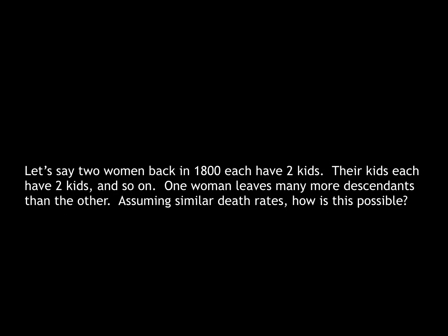I want you to think about this riddle. Let's say two women back in 1800 each have two kids. Their kids have two kids, and so on. One woman leaves many more descendants than the other. Assuming similar death rates, how is this possible?